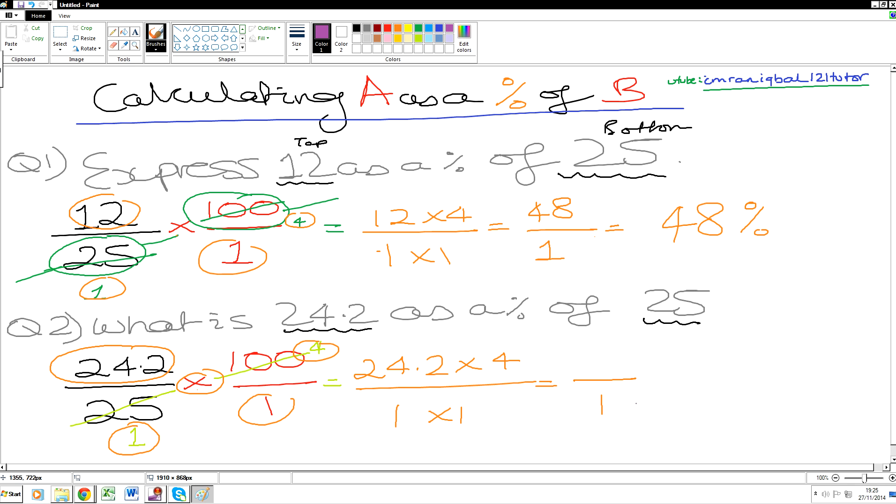24.2 times by 4 - if you want to work it out on the side, we just work that quickly over here. 24.2 times by 4. You got one decimal place in the question, so one in the answer. 4 times by 2 is 8, 4 times by 4 is 16, 2 times by 4 is 8, and 1 is 9: 96.8.